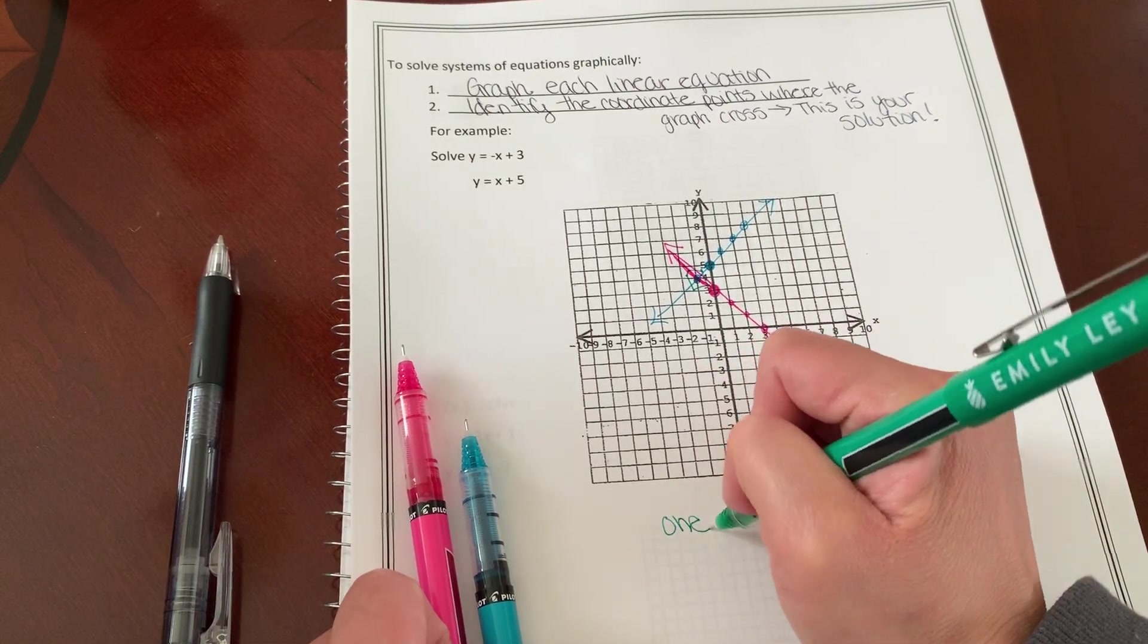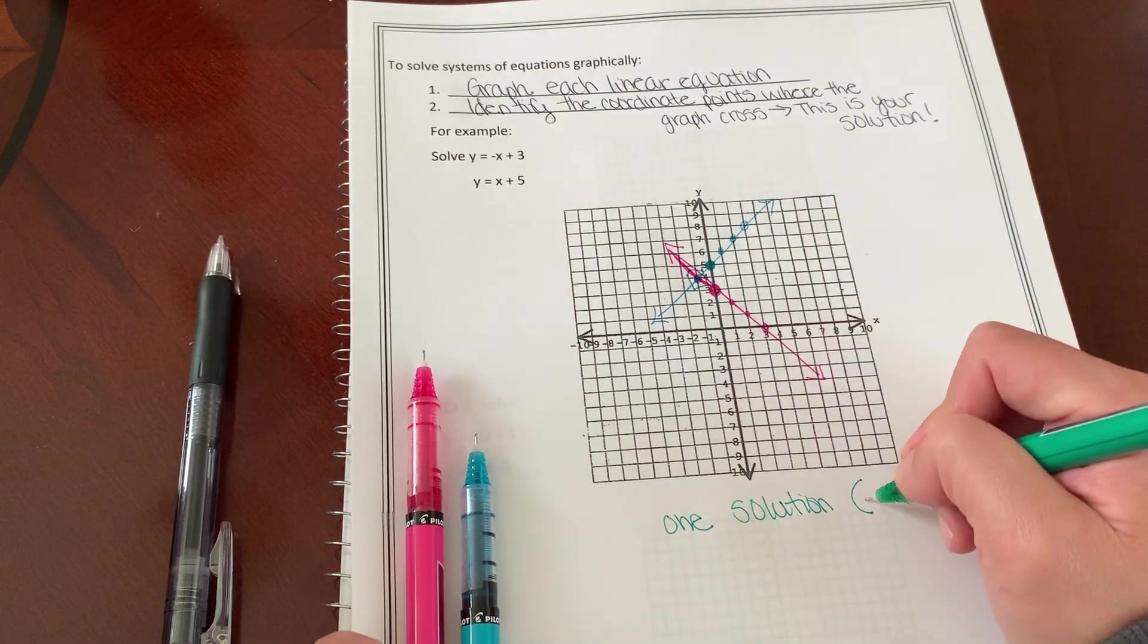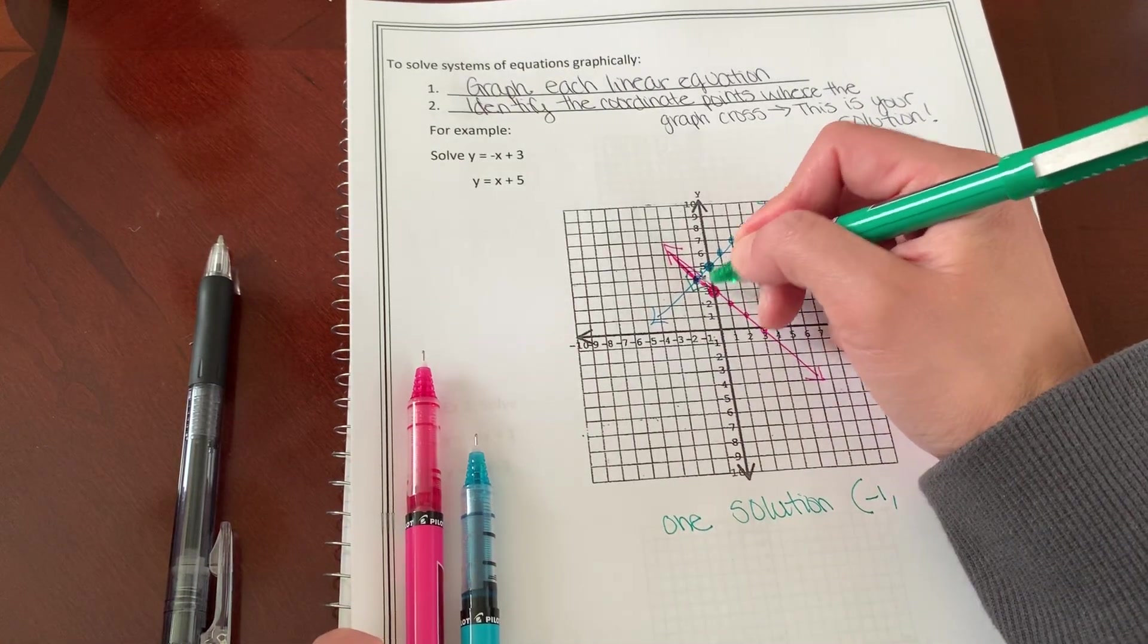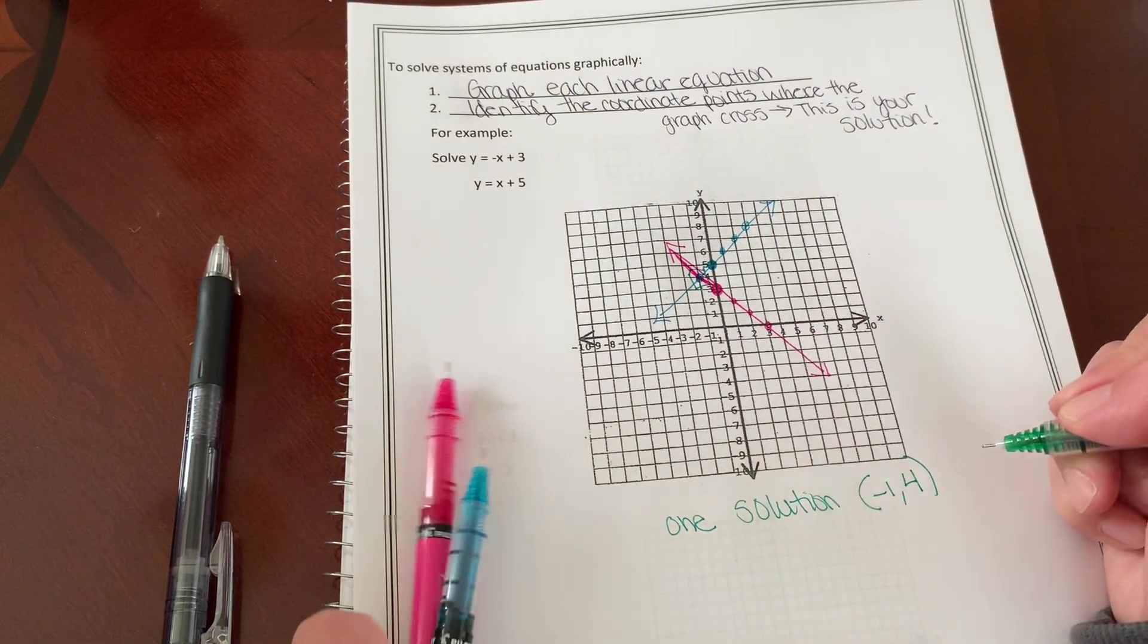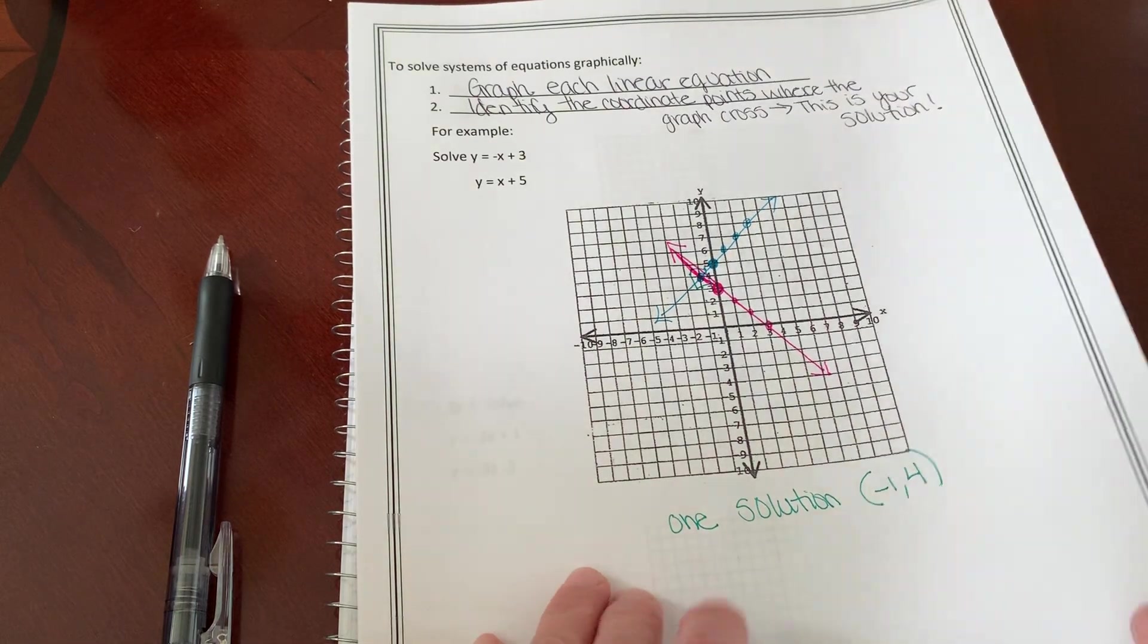So I have one solution, and it's going to cross at negative one, one, two, three, four, positive four. Okay, let's do a couple more examples.